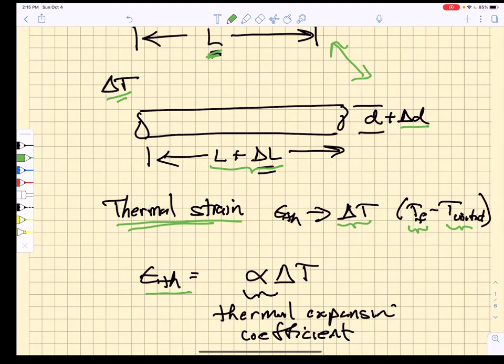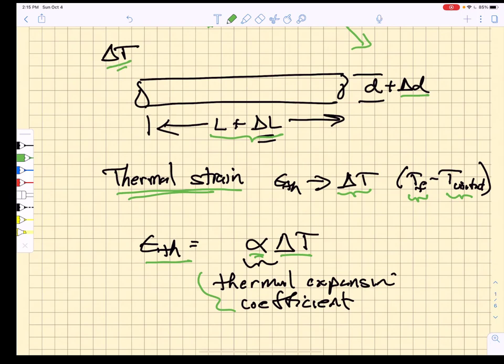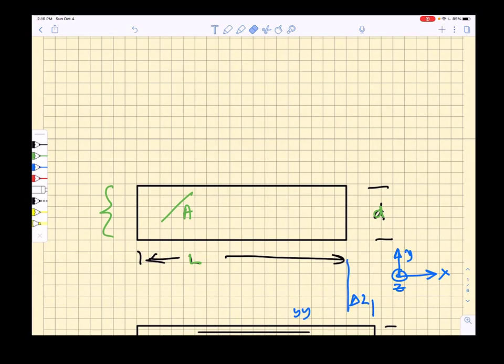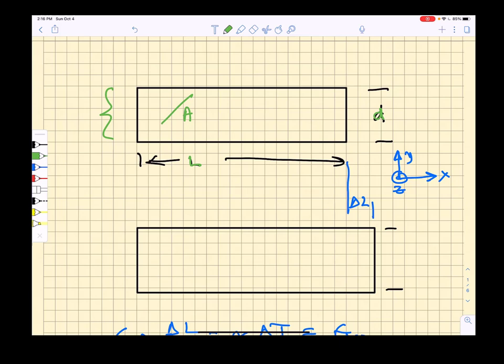That thermal strain is measured as a proportion of that temperature difference using the thermal expansion coefficient. Now if we had a shaft, this is supposed to represent a shaft right here of length L and diameter D, I know that if I heat it up those dimensions are going to change and so if I were to heat it up it would expand in diameter as shown here and it would expand in length as shown here. The expansion in length is delta L. The expansion in diameter is going to be delta D.